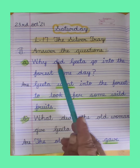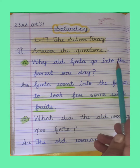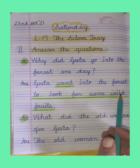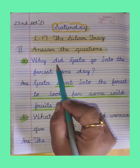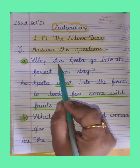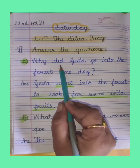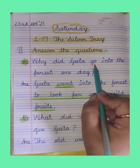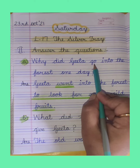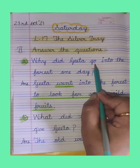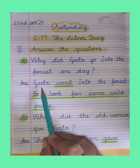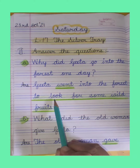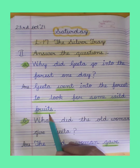Part A: Why did Gita go into the forest one day? Here you can see the word 'did' is written, which means the question is asked in past tense. So in the answer we will change 'go' into 'went', because 'go' is present tense and 'went' is past tense. Answer: Gita went into the forest to look for some wild fruits.